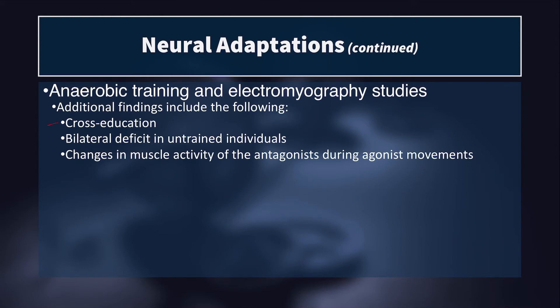Cross-education is a phenomenon where training one side of the body also provides some neural benefit to the other side. The untrained side does not gain muscular benefits because those muscle fibers aren't experiencing increased mechanical tension or metabolic byproducts. However, because some neural factors are central rather than peripheral, and because the body strives for symmetry, some cross-education occurs. For example, training only the right side with bicep curls can produce a measurable increase in peak voluntary contraction on the untrained left side.